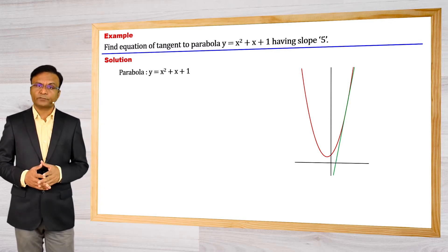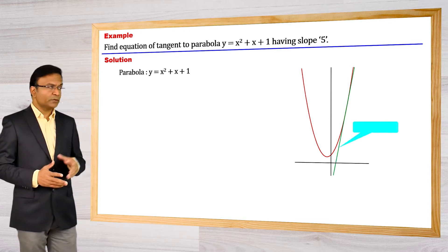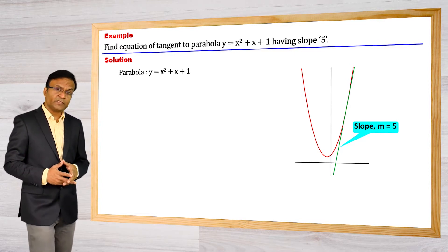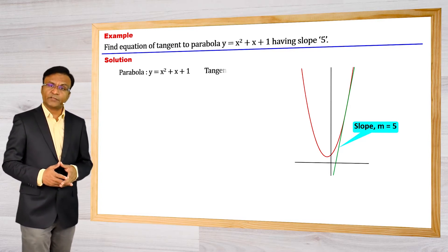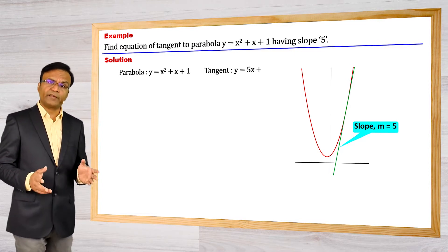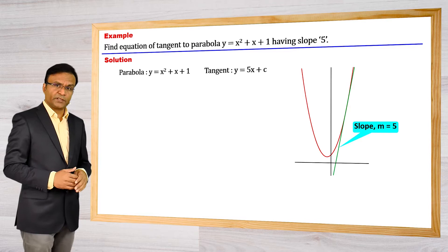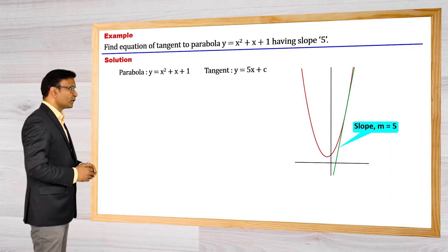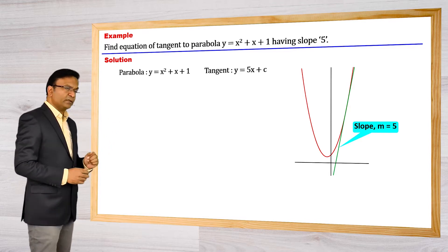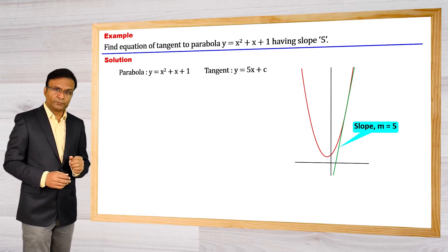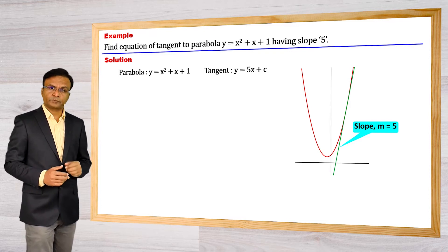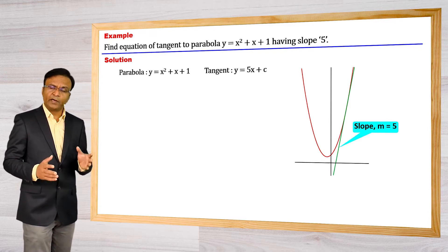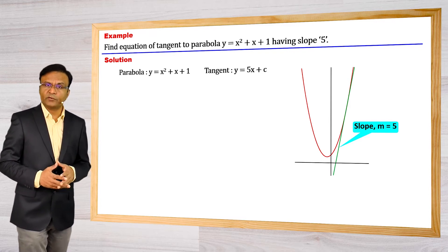Slope is given, so the equation of tangent can be taken as y is equal to 5x plus c. Now we have to find the value of c. How can we find this value of c?